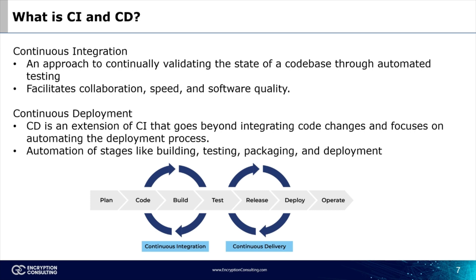CD, or continuous development, is an extension of CI that goes beyond integrating code changes and focuses on automating the deployment process — automation of stages like building, testing, packaging, and deployment. A full CI/CD pipeline involves planning, coding, building, testing, releasing, deploying, and operating.